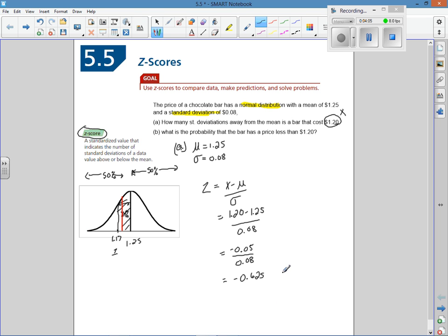We only consider two decimal places, so we're going to round to negative 0.63. Because it's a five, we round up to three.